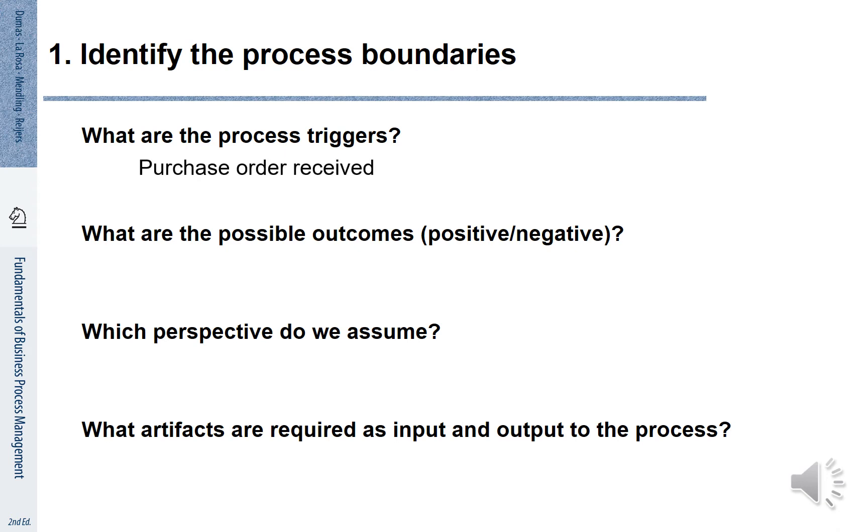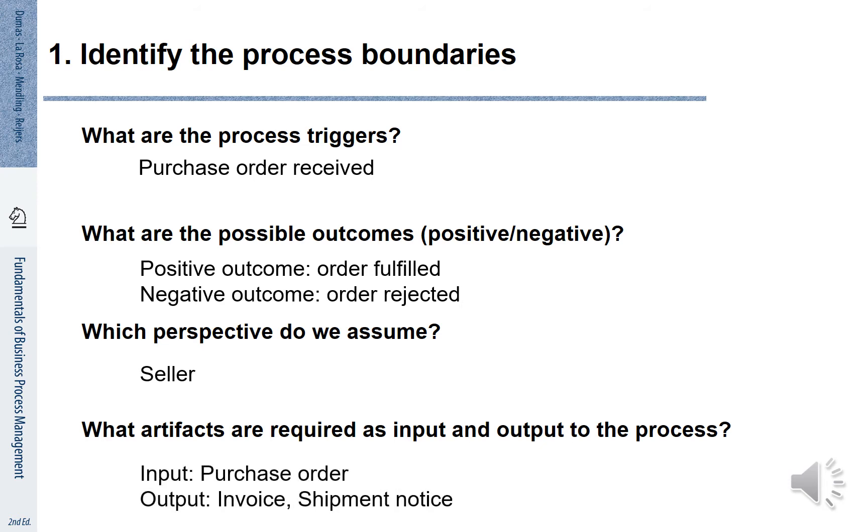Let's consider the example of a purchase order. A trigger is the purchase order being received. Potential outcomes are that the order is fulfilled or the order is rejected. We may take the perspective of the seller. And the artifacts that we need to consider are the purchase order, the invoice and the shipment notice.